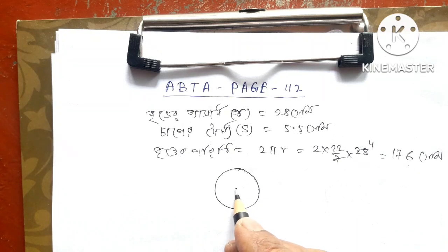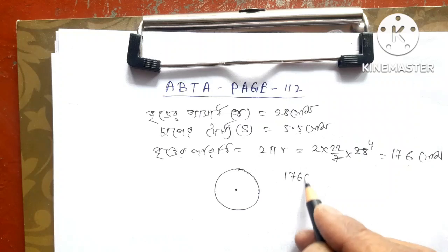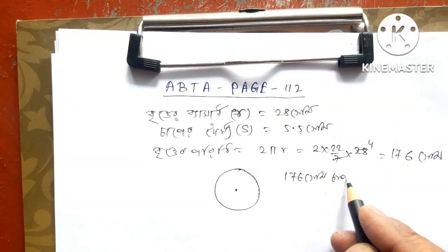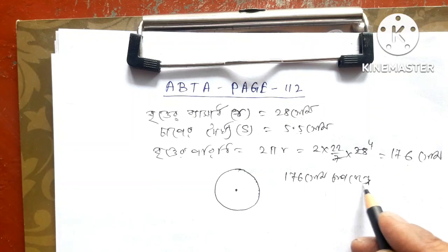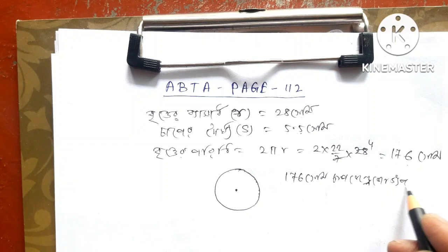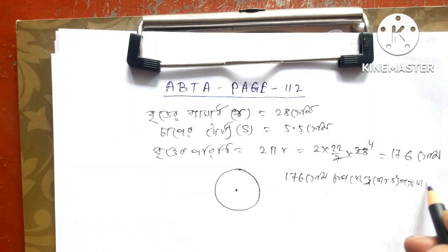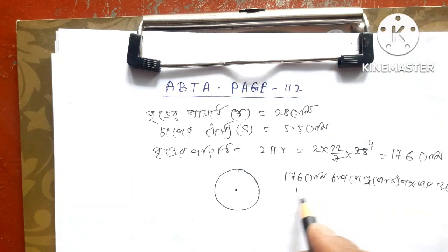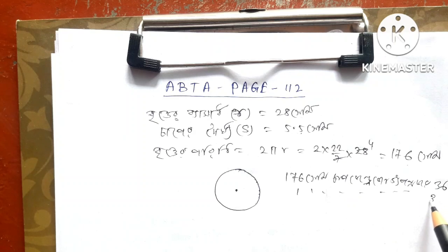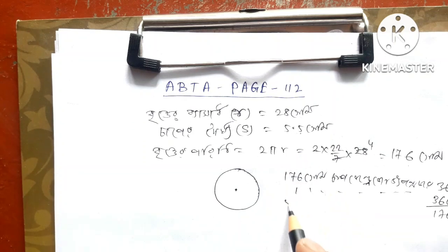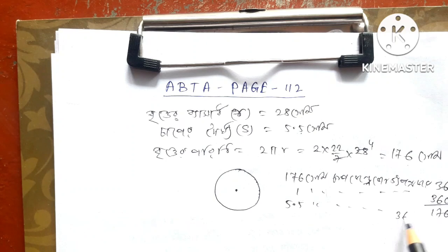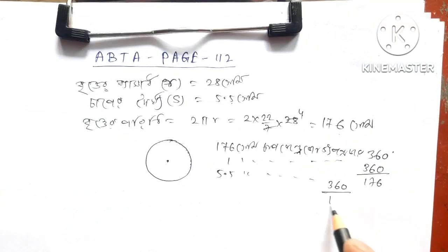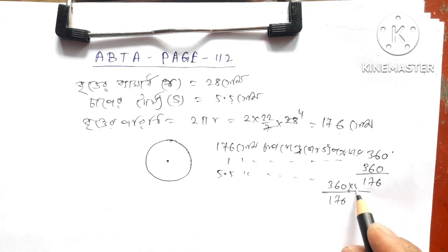The square root is 3.6 cm. The square root is 3.6 cm. This is 5.6 cm. 360 by 17 into 5.